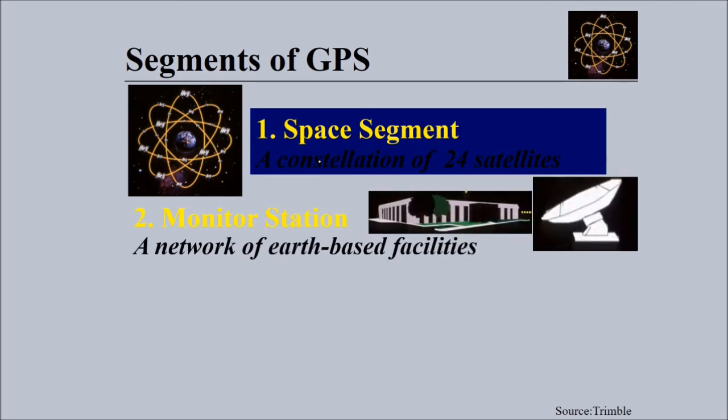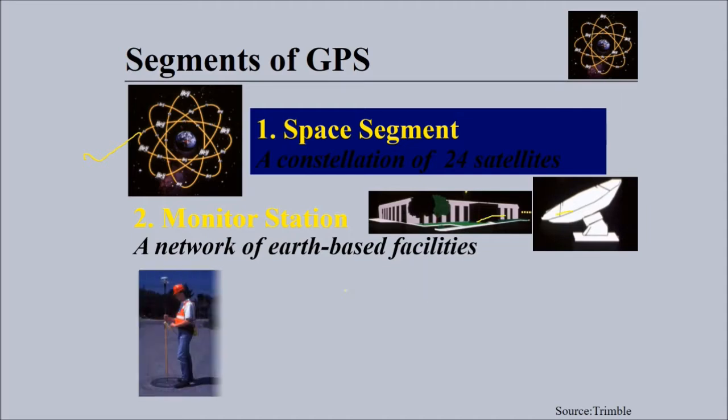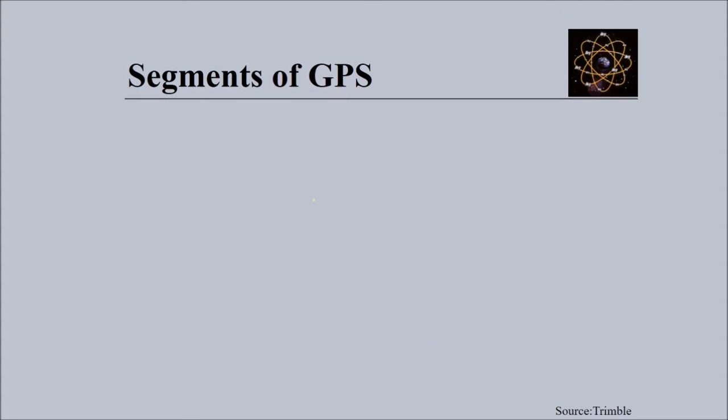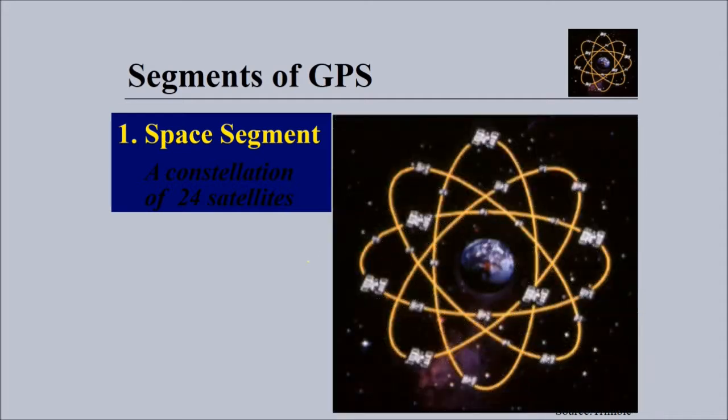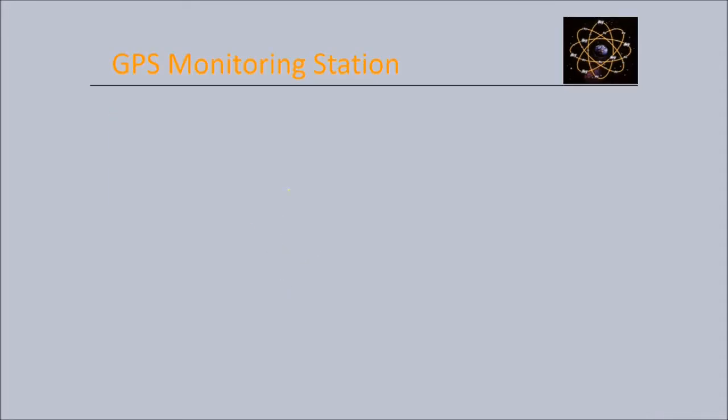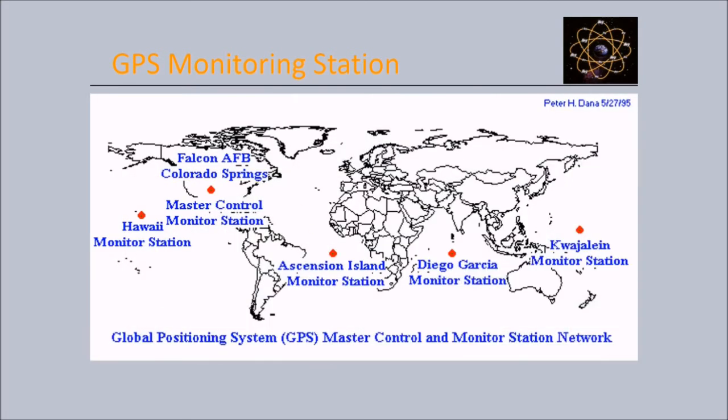First we have the space segment - these satellites which are orbiting. Second, the monitor stations - the network of earth-based satellites. And third, the user segment - users and their equipment. The main monitoring station is here at Colorado.